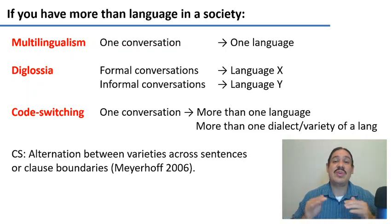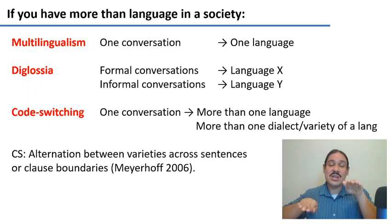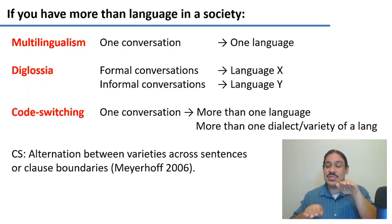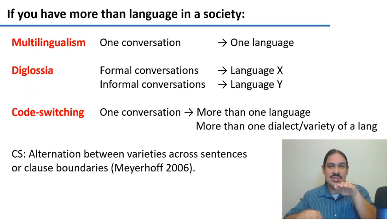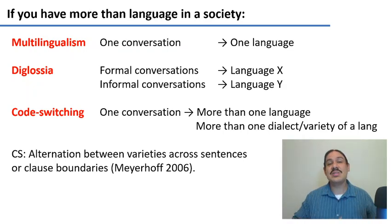Diglossia is a situation where you have more than one language in society, and there is already a societal consensus for which types of conversations go in which language. So formal conversations should go in Modern Standard Arabic in the Arabic-speaking world, and informal conversations should be carried out in the colloquial varieties for each of the regions — for example, Modern Standard Arabic for formal conversations and Egyptian Colloquial Arabic for informal conversations.